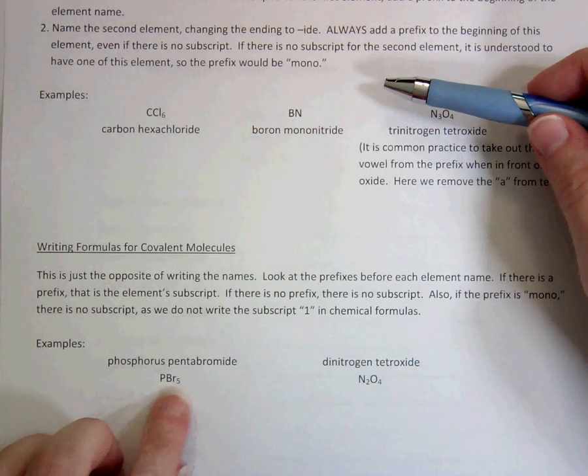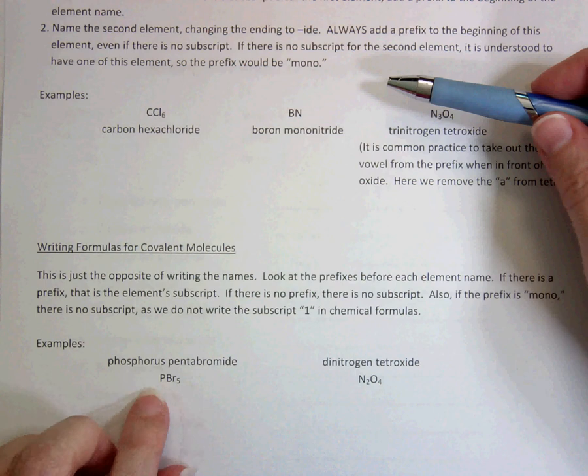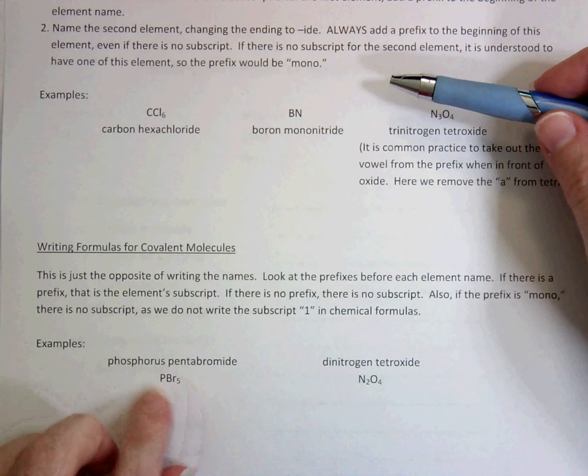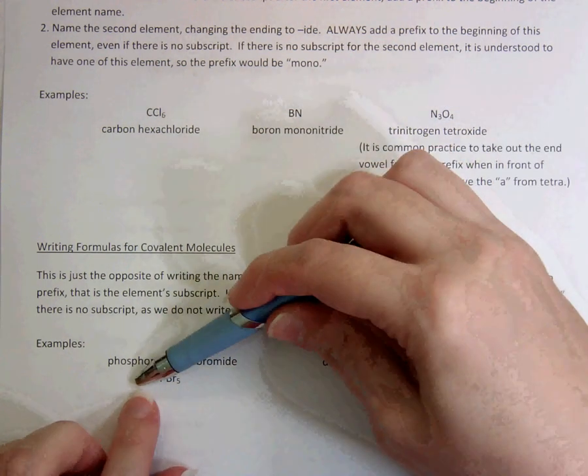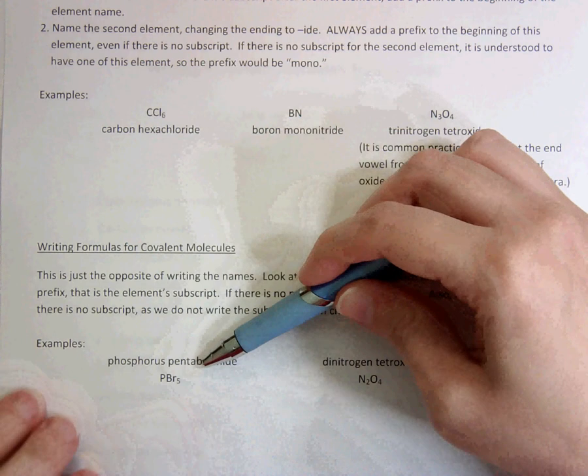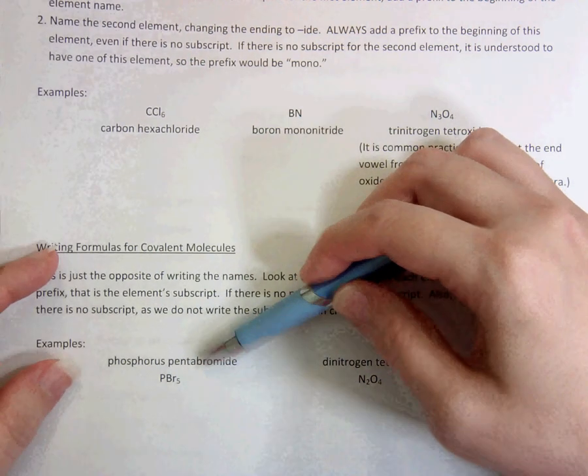That way it'll actually look like it's part of the compound. Also, don't leave a space in between your two symbols, because we're trying to say that these are together in a compound. So don't put a P over here and then Br5 with a gap in between. We want it to look like an actual compound.